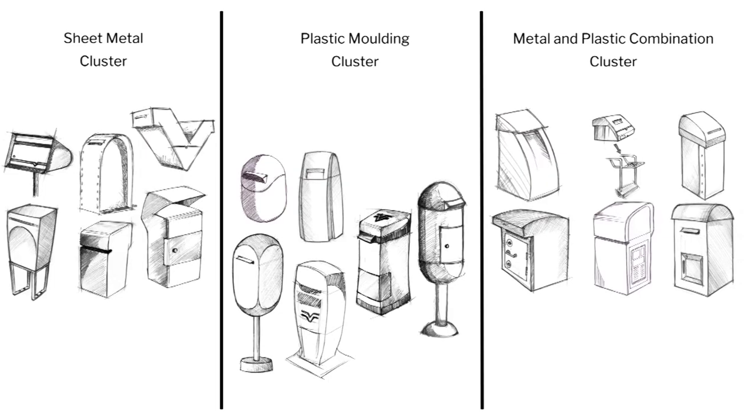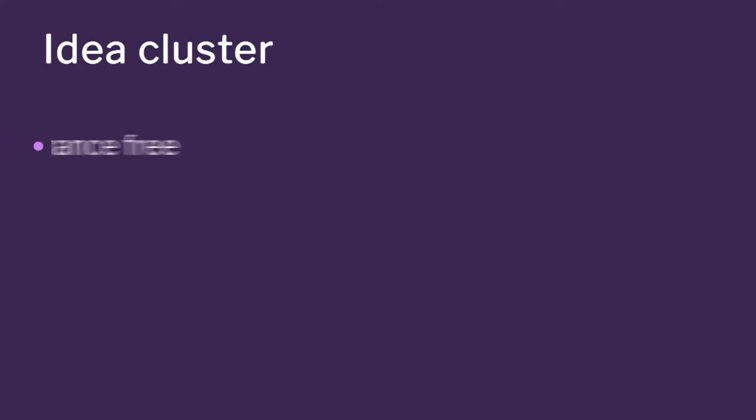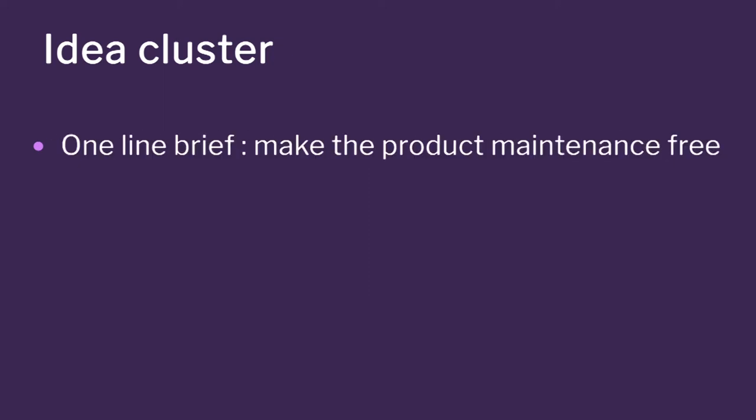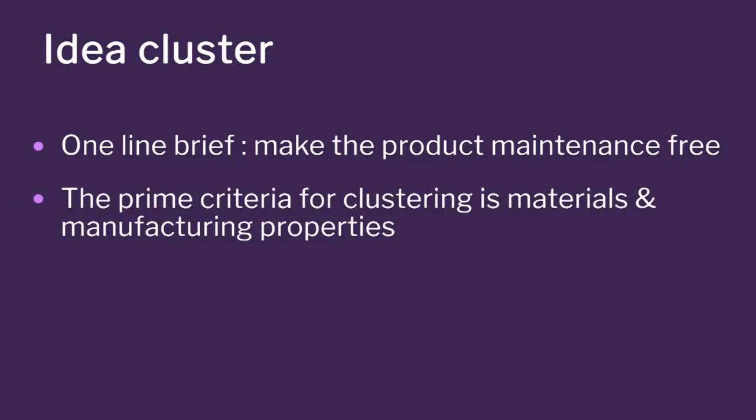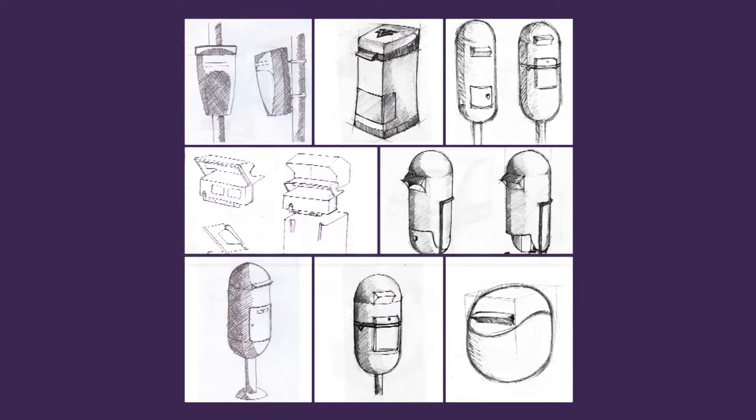What is the objective of our project? The one-line brief: maintenance free. So maintenance free was the objective. How do you achieve maintenance free generally? By having good manufacturing and good materials. So your clusters will be based on material properties and manufacturing properties. That is what we decided in this case.